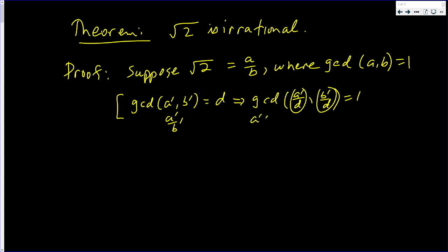These two numbers are integers. Say a prime over d is an integer and b prime over d is an integer, and let's call those integers a and b, and it's in reduced form. We can definitely reduce a fraction so it has no common divisors.